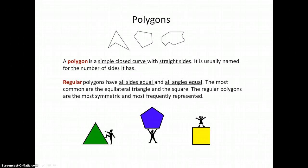A square isn't named for its sides, but we could call it a quadrilateral, which literally means four sides. A pentagon means five sides. Regular pentagons have all of their sides equal and all of their angles equal.